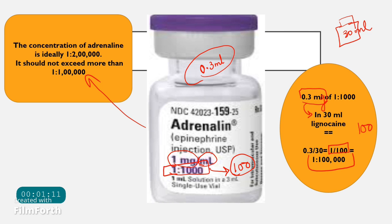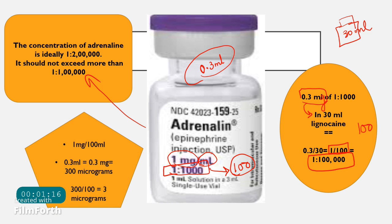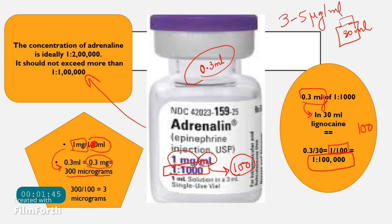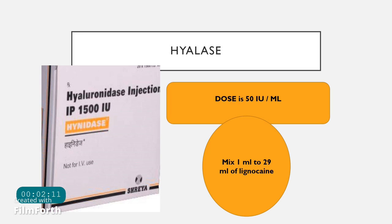To verify the dose: 0.3 ml of adrenaline contains 0.3 mg, which is 300 micrograms. When diluted 100 times into the 30 ml lignocaine vial, 300 micrograms becomes 3 micrograms per ml — exactly within the target dose range of 3 to 5 micrograms per ml. So the final adrenaline concentration is 1 in 1 lakh at a dose of 3 micrograms per ml.